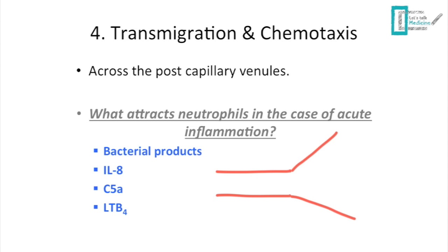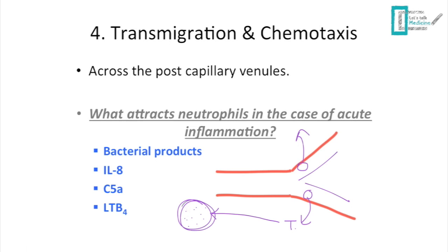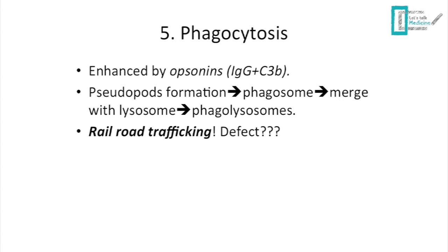Next is transmigration and chemotaxis. Transmigration is the process by which neutrophils exit the vessel into the interstitial space, occurring at post-capillary venules — the same site of increased vascular permeability. Chemotaxis is directed movement toward the inflammatory trigger such as bacteria. Key mediators attracting neutrophils include bacterial products, IL-8, C5a, and leukotriene B4.